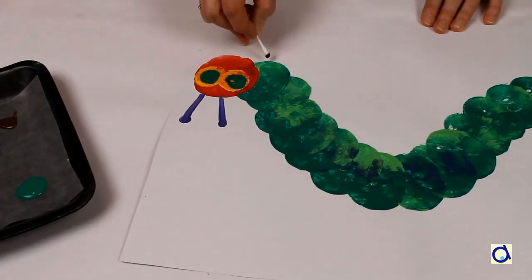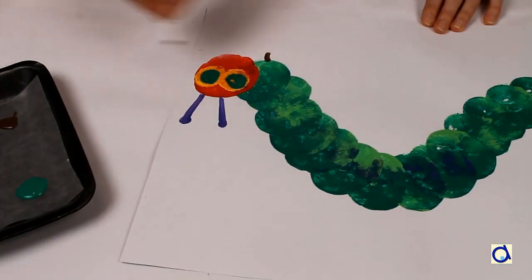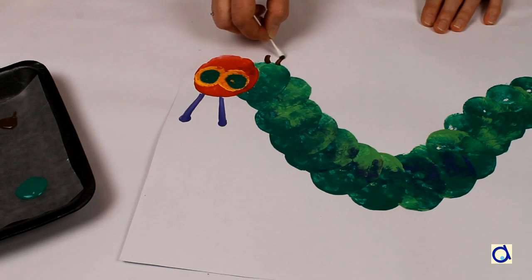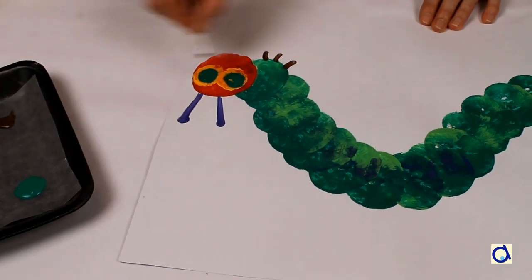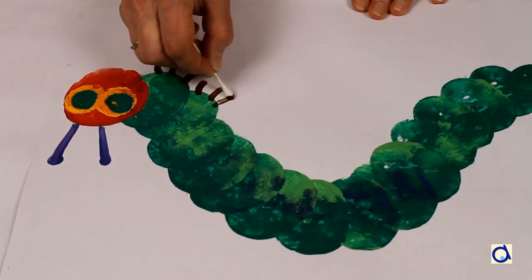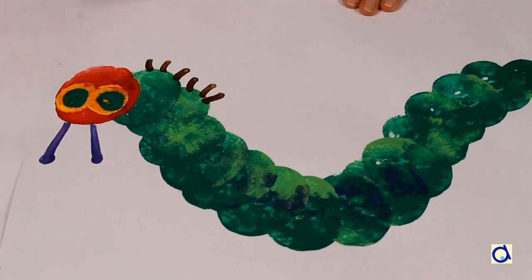The caterpillar is the larva of the butterfly, so it's an insect and most caterpillars have six legs on the front of their body. You can represent the legs by using a cotton swab and brown paint.